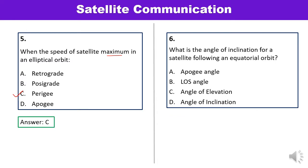Question 6: What is the angle of inclination for a satellite following an equatorial orbit? In my opinion, this question is incomplete. The angle of inclination for a satellite which follows an equatorial orbit is zero degrees — when the orbit of a satellite and earth's equator are aligned, inclination is zero. However, this option is not given, so this appears to be an incomplete question.